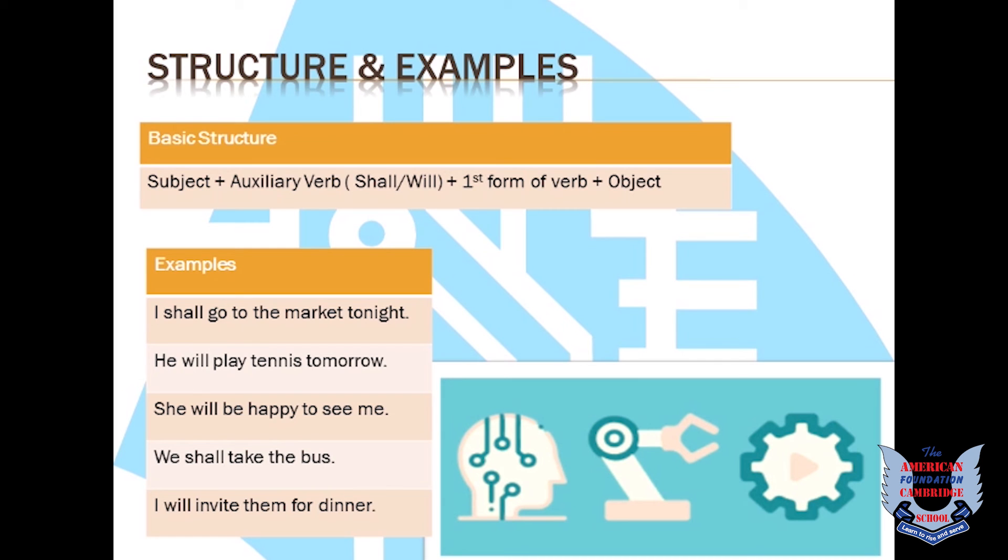Shall is used with I and we. As you can see in the example, I shall go to the market tonight. We shall take the bus. With the rest of the pronouns and nouns, we use will.